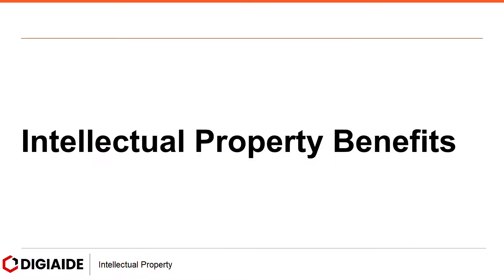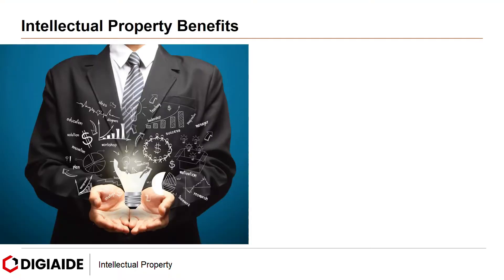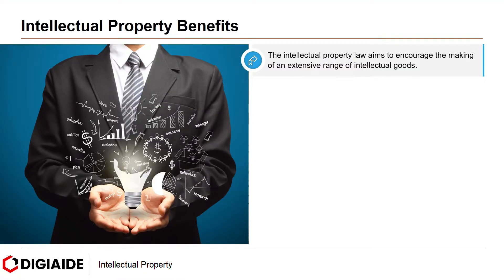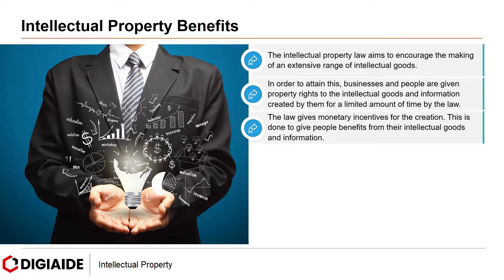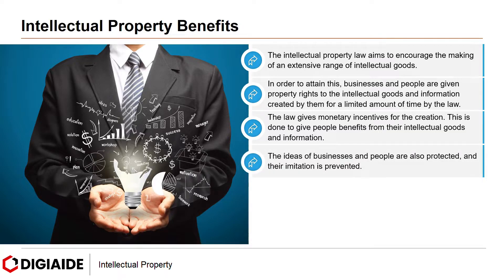Moving on to Intellectual Property Benefits. The Intellectual Property Law aims to encourage the making of an extensive range of intellectual goods. In order to attain this, businesses and people are given property rights to the intellectual goods and information created by them for a limited amount of time by the law. The law gives monetary incentives for the creation, to give people benefits from their intellectual goods and information. The ideas of businesses and people are also protected and their imitation is prevented.